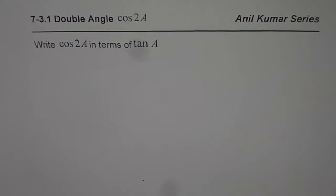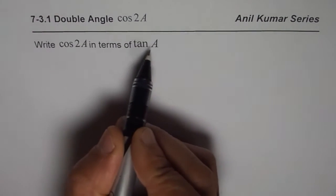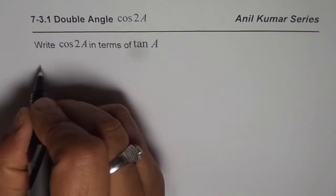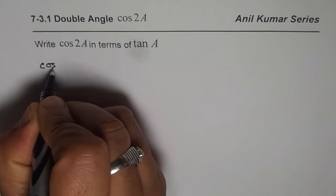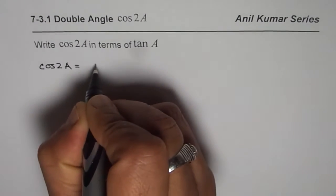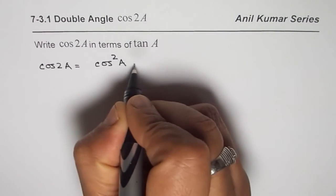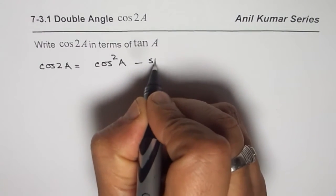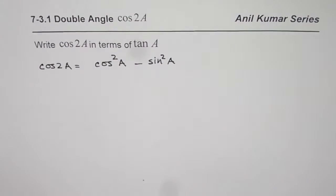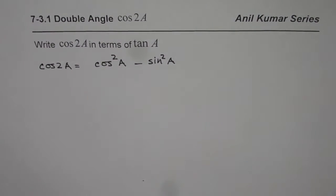The question here is: write cos 2A in terms of tan A. Now we know cos 2A is equal to—there are three formulas, you can start with any one of them. Let's take cos²A minus sin²A. In general, we should normally take cos²A minus sin²A.